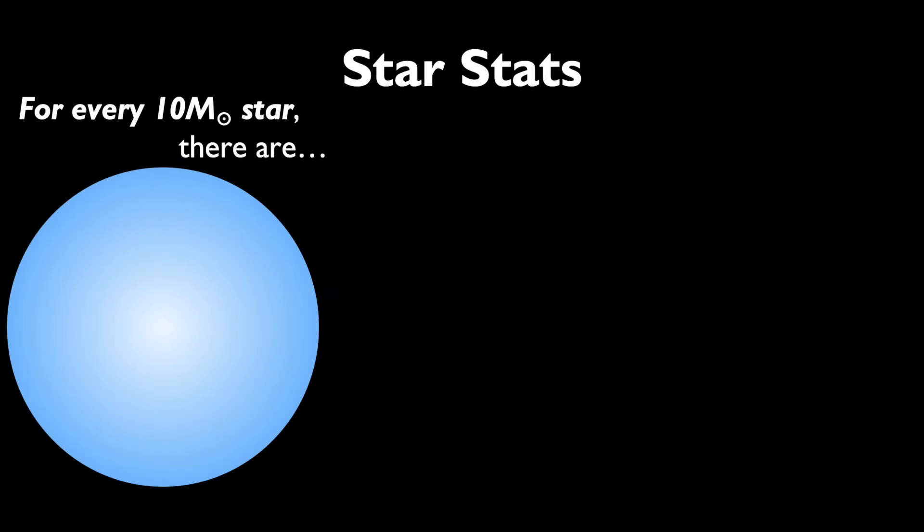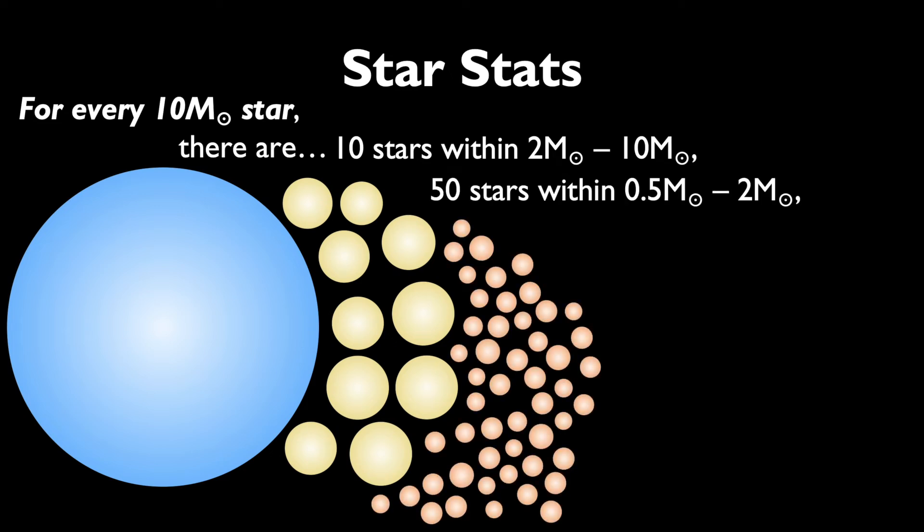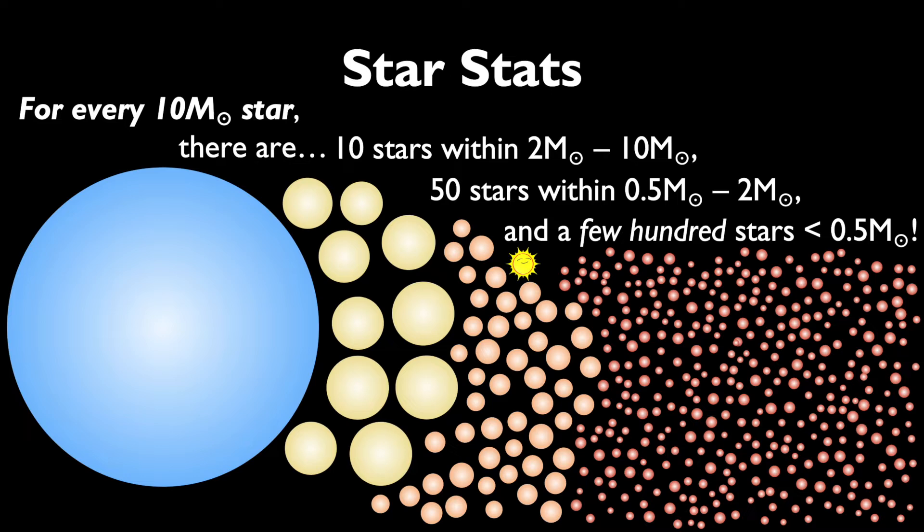How many and of what type of stars can we find in the main sequence alone? For every single 10 solar mass star in the main sequence, there are 10 stars within 2 and 10 solar masses, 50 stars within half and 2 solar masses, like our own sun, and a couple hundred stars all under half a solar mass.